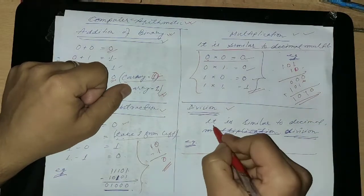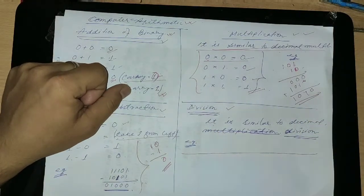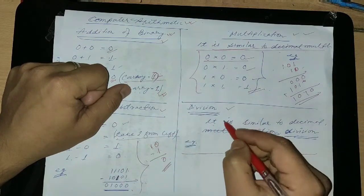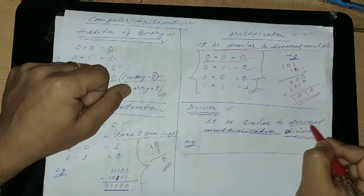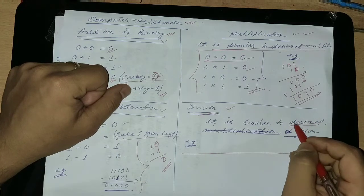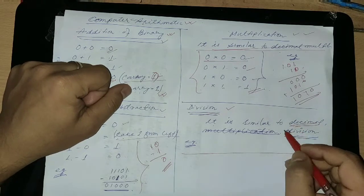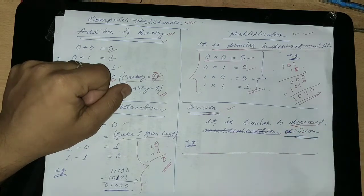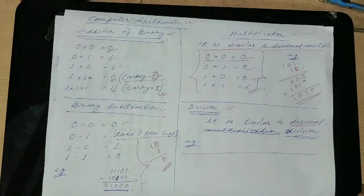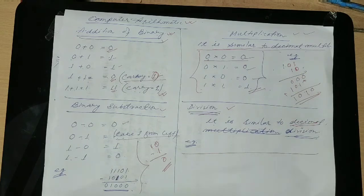Now, division method is totally the same. It's not at all different from the decimal number system. Since you know how to divide in the decimal number system, you can divide in the binary number system the same way.